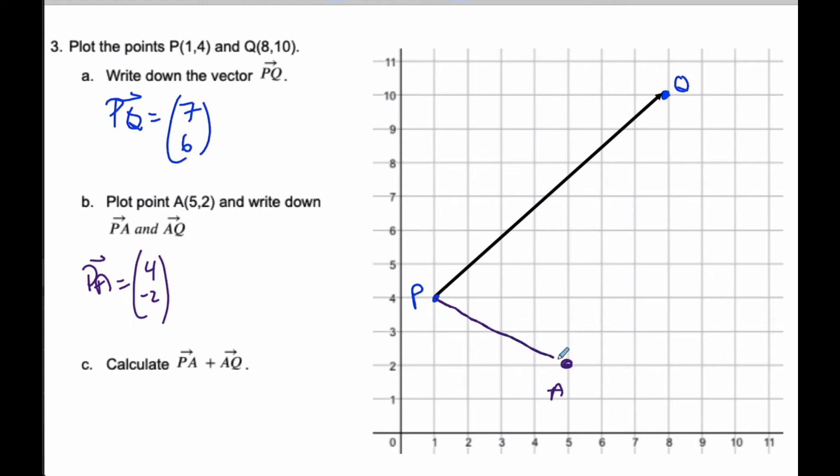And if you look, here's my vector PA. I can go P, that's negative 2 is the y, and a positive 4 is the x. Similarly, now I want to find AQ. Well, AQ is going to be, if I take Q, 8 minus 5 is 3, and 10 minus 2 is 8. So again, if I take a look at my vector here, maybe I'll do it with the green. And here is AQ.